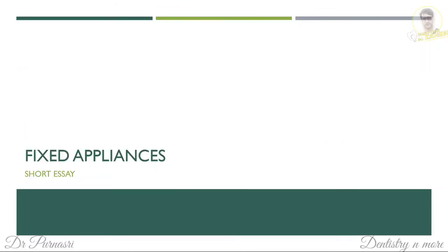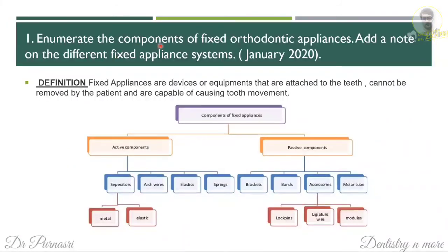The next topic is fixed appliances. The short essay asks to enumerate the components of fixed orthodontic appliances and add a note on different fixed appliance systems. Fixed orthodontic appliances are devices attached to teeth that cannot be removed by the patient and are capable of causing tooth movement. The components are divided into active and passive. Active components include separators, arch wire, elastics and springs. Passive components include brackets, bands, accessories such as lock pins, ligature wire or modules, and the molar tube.